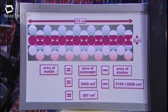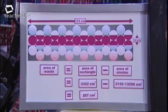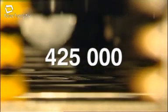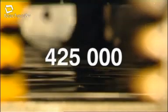That equals 267 to the nearest whole centimetre squared — that's the waste produced in one row. In fact, 425,000 rows are stamped out daily. If it wasn't recycled, how much aluminium would the factory waste in a single day?